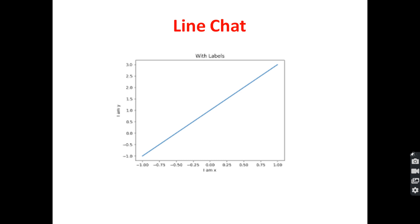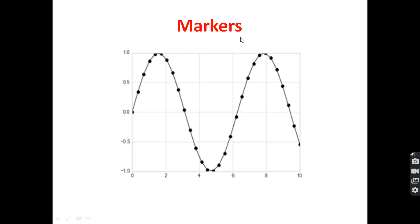This is called a line chart. We have to draw the line between the x-axis and y-axis. This is the x-axis and this is the y-axis. We draw the line between them — that is called a line chart. There are also markers. Markers are used for emphasizing each and every point. A thick dot is one example of a marker. Markers are used for emphasizing a specific point.